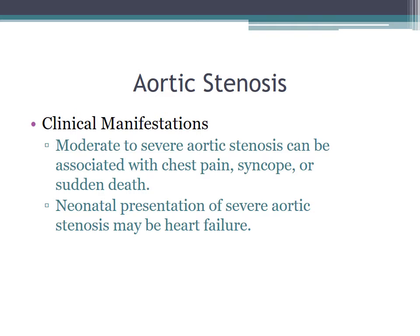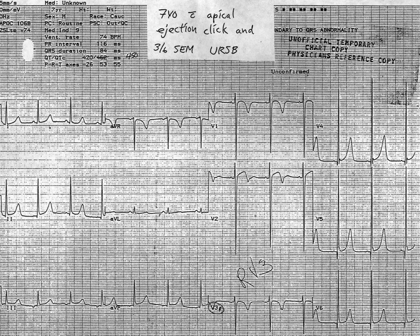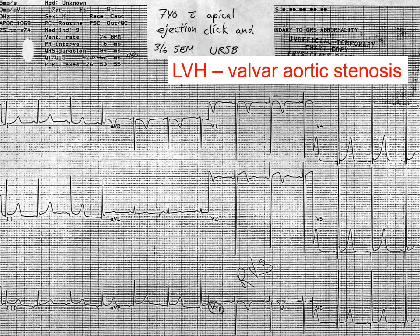The chest x-ray is typically normal in mild aortic stenosis. The natural history of aortic stenosis is that it's progressive — unlike mild pulmonary stenosis. On EKG for aortic stenosis, you can see deep S waves in V1 and tall R waves in V6 from LVH. There is also imaging evidence of subaortic obstruction visible on a left ventricular angiogram.